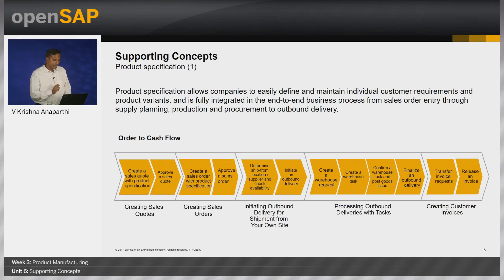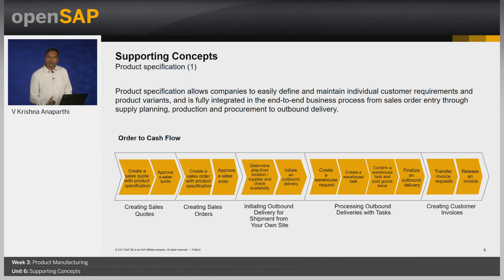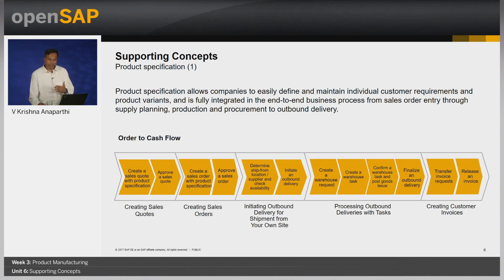Having discussed batch management, let us quickly discuss product specification. We already know that we can use a product specification ID and properties to record the special requirements a customer needs. The product specification ID and properties follow the product through the process of external procurement or internal production. This enables you to order, manufacture, pick, and ship products with specific requirements to your customer. Taking the order-to-cash example, the product specification can be maintained right from the sales quote process, carried forward to the sales order, to the delivery process, and finally through outbound deliveries and customer invoices.